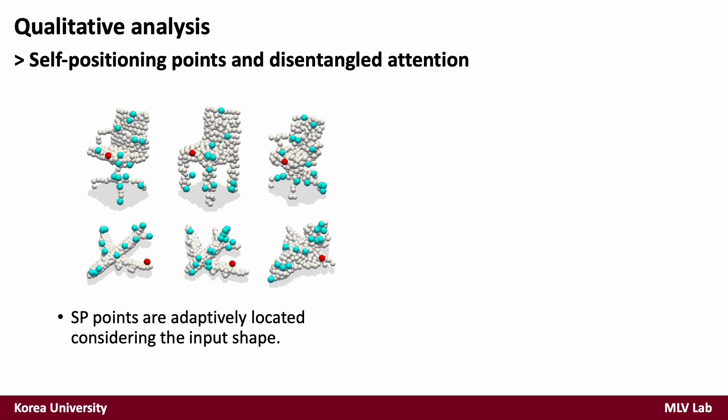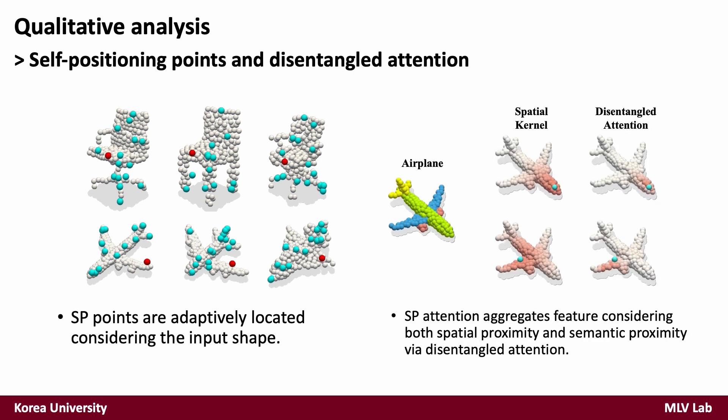For a deeper understanding of each component in SPA, such as self-positioning points and disentangled attention, we also provide qualitative analysis. The left figure shows that the SP points are adaptively located in various samples from different categories. The right figure shows SPA aggregating features considering spatial proximity as well as semantic proximity via disentangled attention.